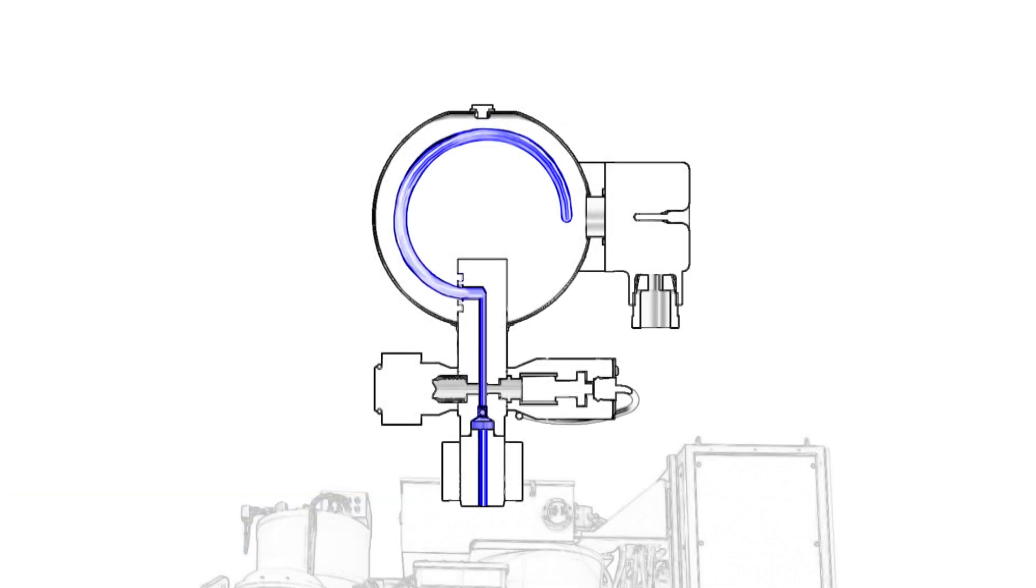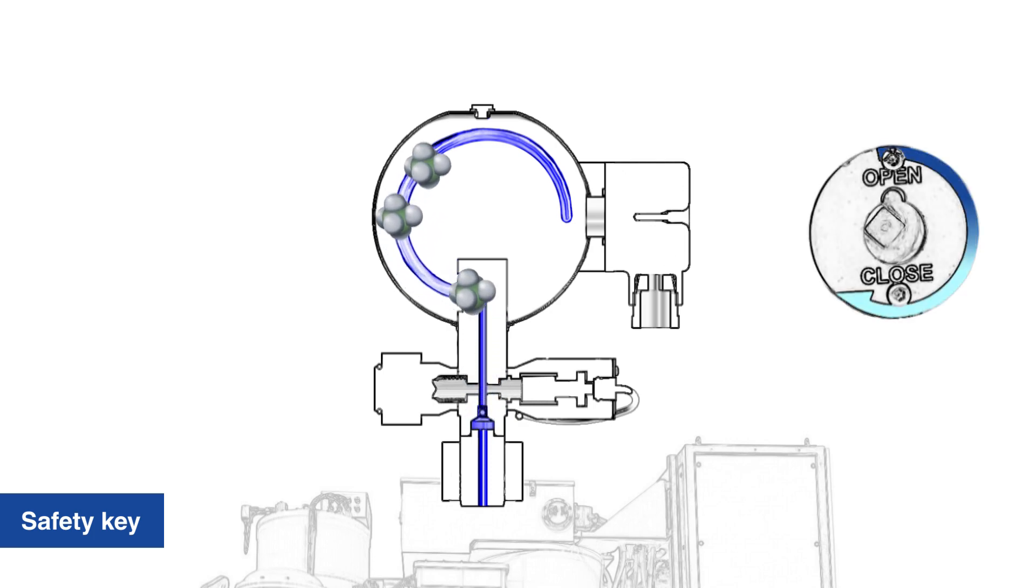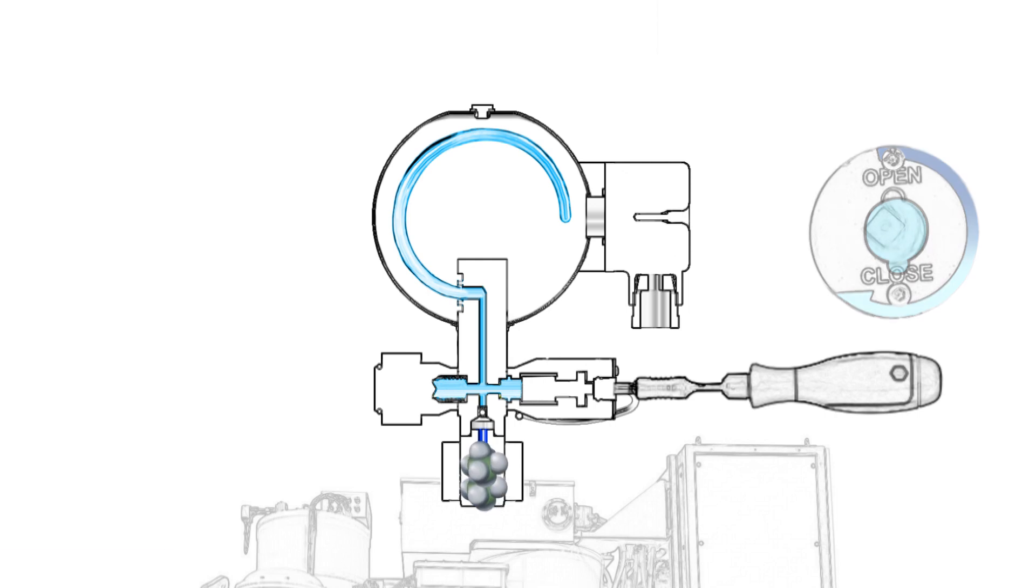For recalibration, the corresponding safety key is required. This shuts off the gas density monitor from the gas tank and thus allows a safe recalibration.